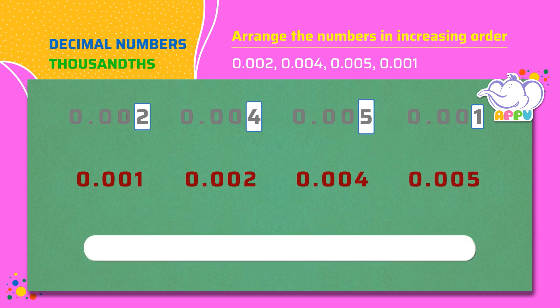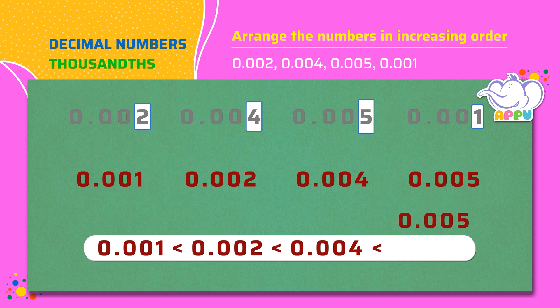So the answer in ascending order is 0.001 is less than 0.002 is less than 0.004 is less than 0.005.